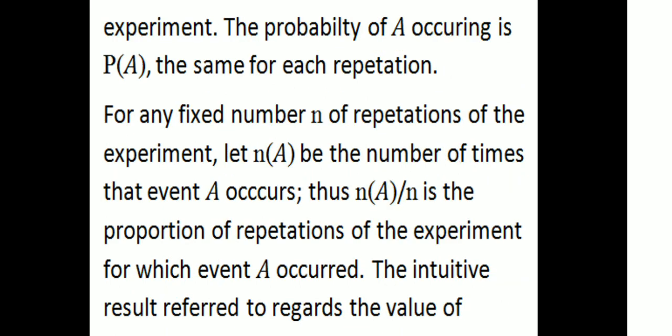The probability of A occurring is P(A), and the probability of A is the same for each repetition. For any fixed number N of repetitions of the experiment, let N(A) be the number of times that event A occurs. Thus, N(A)/N is the proportion of the repetitions of the experiment for which event A occurs.